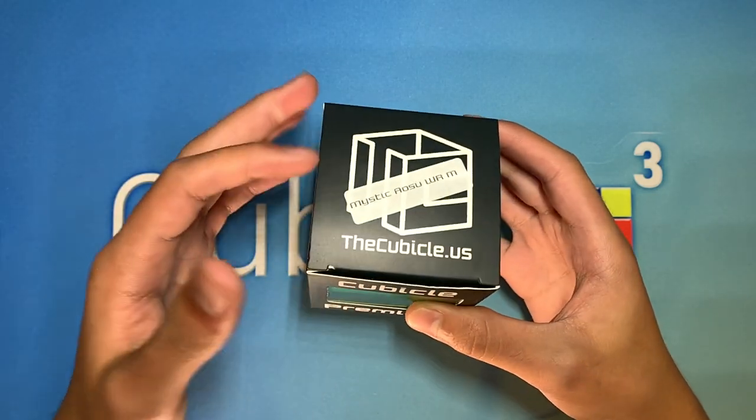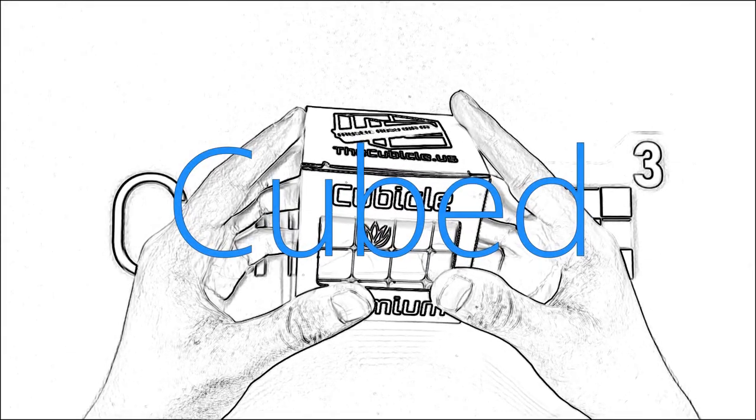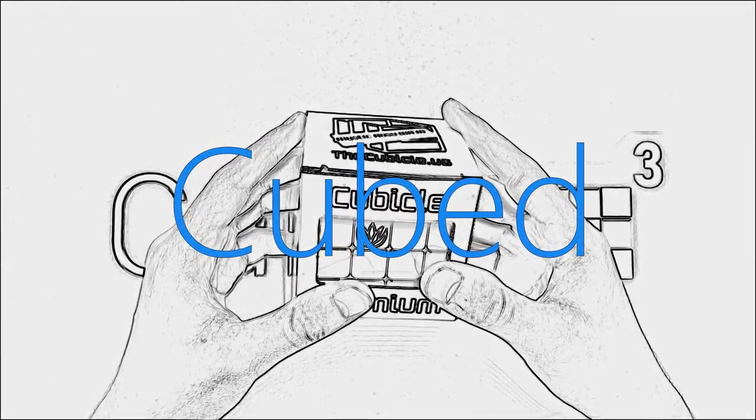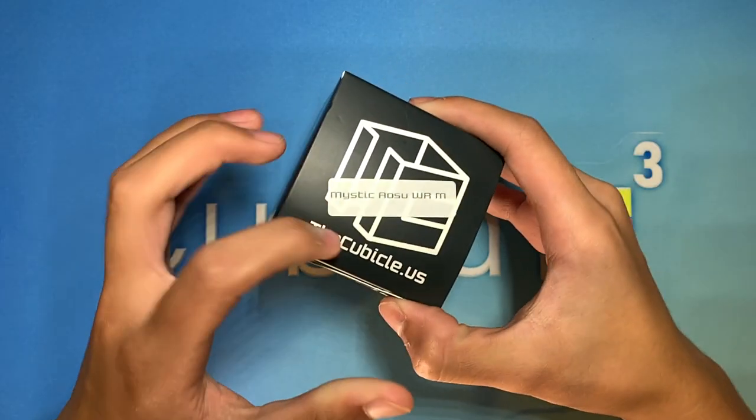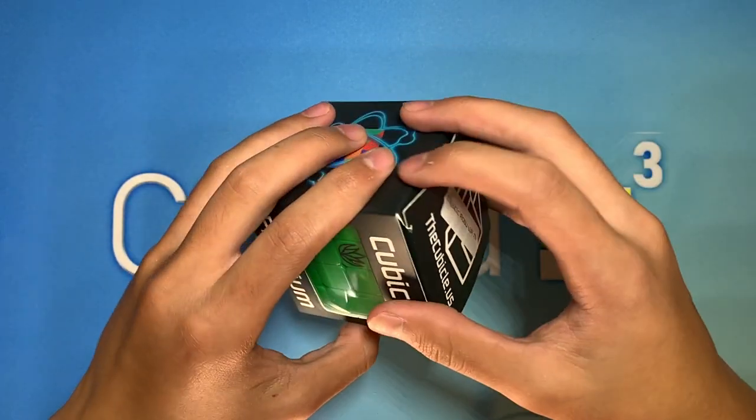Hey guys, today I'm going to be unboxing the Mystic Aosu WRM. As you can tell in the name of the cube, this cube has been set up with Mystic, which is the cubicle's aloe basic lubricant.